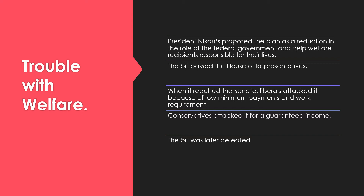There was some trouble with this. As Nixon proposed the plans of reduction in the role of the federal government and to help welfare recipients become responsible for their lives, the bill did pass the House of Representatives, but when it reached the Senate, liberals attacked it because of low minimum payments and the idea of a work requirement. Conservatives, even people in his own party, attacked it because it guaranteed an income to people. So the bill was later defeated in the Senate.